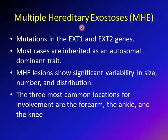Multiple hereditary exostosis (MHE) is a congenital condition due to mutation in EXT1 and EXT2 genes; about 85% of cases involve one of these two genes. Mutation in EXT1 causes a more severe clinical condition than EXT2. About 90% of cases are inherited as autosomal dominant, and 10% are new mutations. In MHE, lesions are variable in size, number, and distribution, but the most commonly affected areas are the forearm, knee, and ankle.